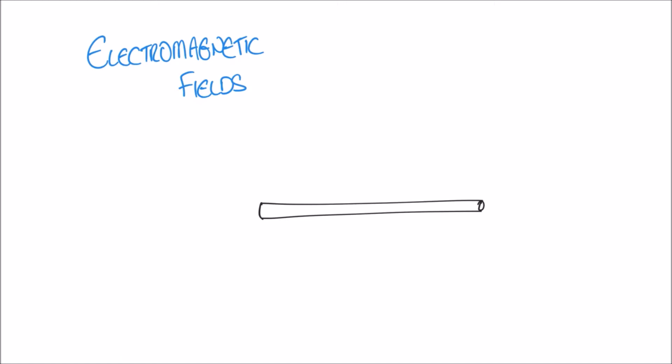We're going to look at how electric currents can create electromagnetic fields. One of the simplest examples is just a wire. I've got here a diagram of a conductor — we can imagine it's a wire — and we can also imagine that there's a current traveling down this wire, marked as current I. Whenever a current travels down a conductor it creates a magnetic field, and in this case the magnetic field travels around the conductor in a circular shape.